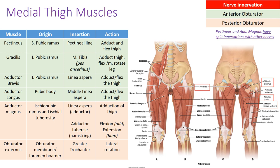Now we move to a separate compartment: the muscles of the medial thigh. These are innervated by the obturator nerve. Recalling the lumbosacral plexus, the obturator nerve has two components — anterior and posterior. Its pathway passes through the obturator foramen in the pelvis and then splits over the adductor brevis muscle: one part goes anterior to the adductor brevis (the anterior division), and one goes posterior (the posterior division).